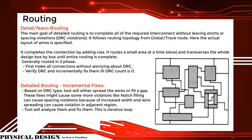During detailed routing incremental fixes, based on DRC type, the tool will either spread the wires or fill a gap. This fix might cause more violations like notch filling. Notch filling can cause spacing violations, and because of increased wire width, spreading can cause violations in adjacent regions. The tool will analyze and fix them in an iterative loop.